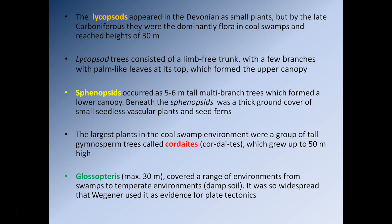The largest plants in the coal swamps were tall gymnosperm trees called the cordates, growing up to 50 meters in height. Another very common plant was Glossopteris, reaching about 30 meters and covering environments from swampy areas to temperate environments similar to where an oak tree would grow today. Glossopteris was so widespread that it was one of the fossils Wegener used as evidence of plate tectonics.